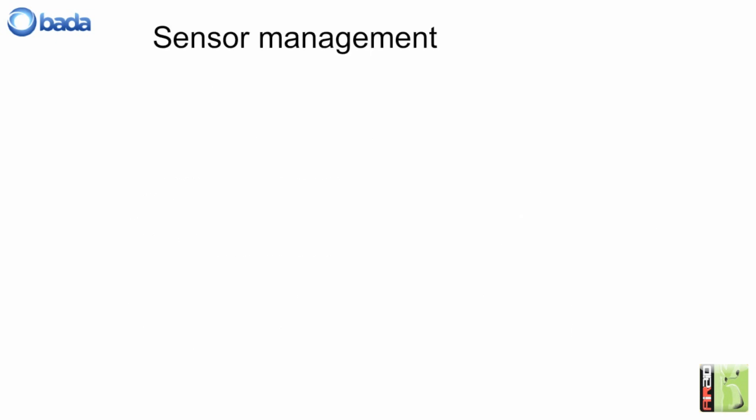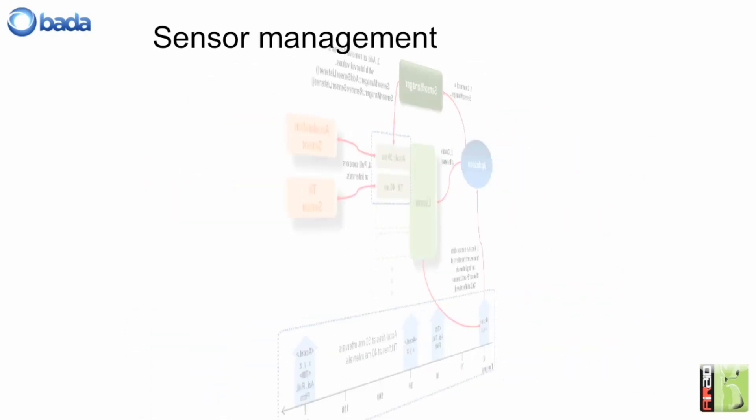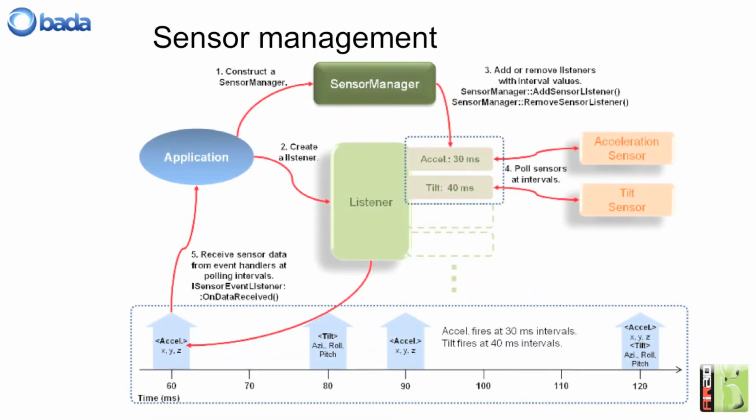So how do sensors work within the Bardo platform? To start making use of sensors within Bardo, you first need to make use of a Sensor Manager Class. You need to construct a Sensor Manager object. Having constructed that object, we then need to create a listener. Listeners are the mechanisms by which, in the Bardo platform, we can receive asynchronous, responsive sensors.